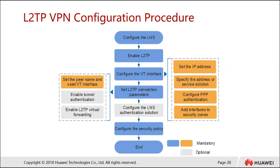First, we need to configure the LNS, which is the firewall. After that, we enable the L2TP protocol. Then we configure the VT interface, which stands for the Virtual Templates Interface. Within this VT interface configuration, we need to set the IP address, specify the address or service solution, configure PPP authentication (PAP or CHAP), and add the interface into the right security zone. These are all mandatory steps.